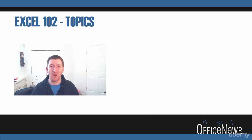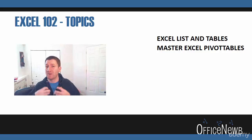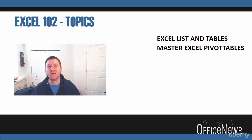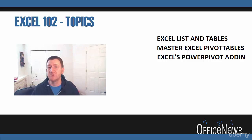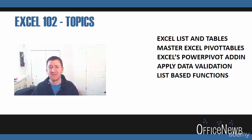Then we're going to switch gears and get into Excel 102 — the intermediate level topics to further advance your skills. We're going to talk about Excel lists or tables, maintaining large sets of data, and being able to filter and sort that data. We're going to talk about mastering Excel pivot tables — perhaps one of my favorite features inside of Excel — where we can create very dynamic, robust, and versatile reports, a skill that just about every boss out there is looking for. We'll also introduce you to the PowerPivot add-in to help you create even more robust pivot tables and reports. We're going to talk about data validation — making sure we get clean data into our system — and some list-based functions to help you maintain and find data within larger datasets.